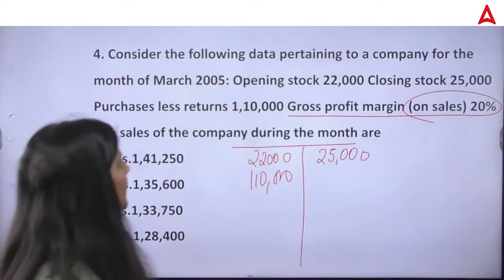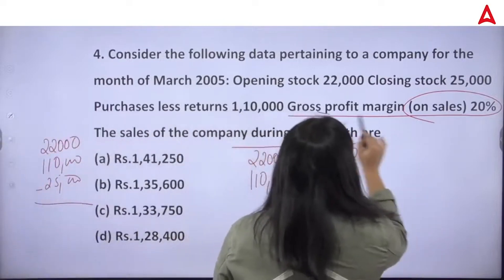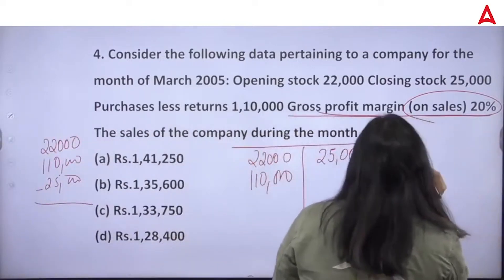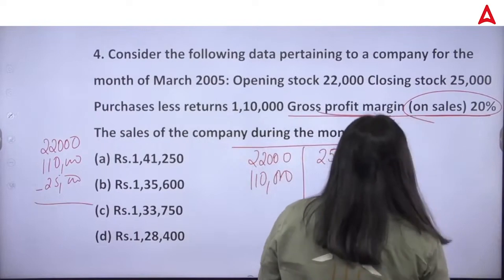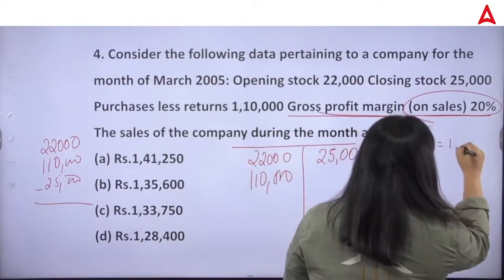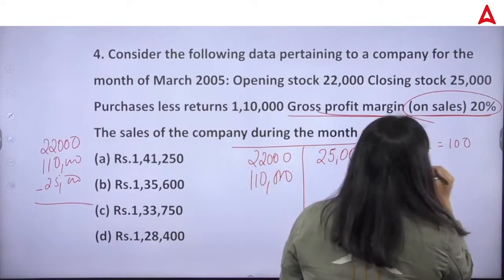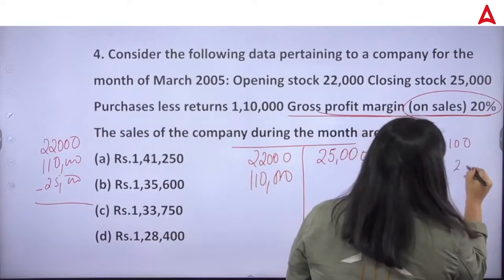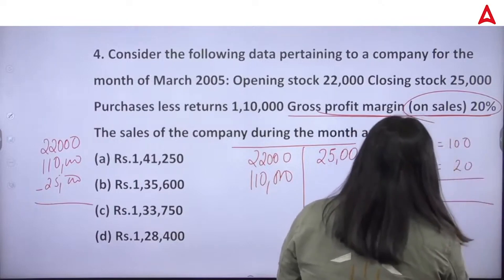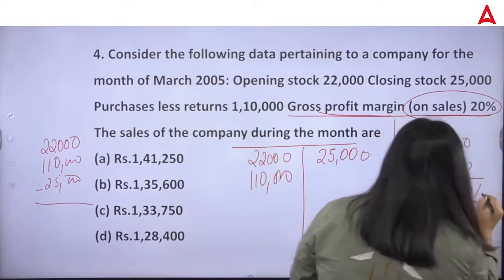Now, what is the gross profit margin? The gross profit is 20% on sales. So if the sale is 100 rupees, how much is the gross profit? 20 rupees. So the cost of goods sold is 80% of sales.